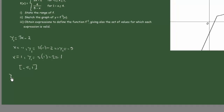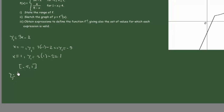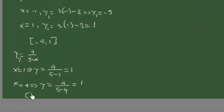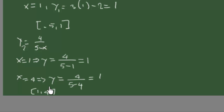Now for the second function y₂ = 4/(5-x) on [1, 4], we do the same thing. For x = 1: y₂ = 4/(5-1) = 4/4 = 1. For x = 4: y₂ = 4/(5-4) = 4/1 = 4. So the range of this second piece is [1, 4].